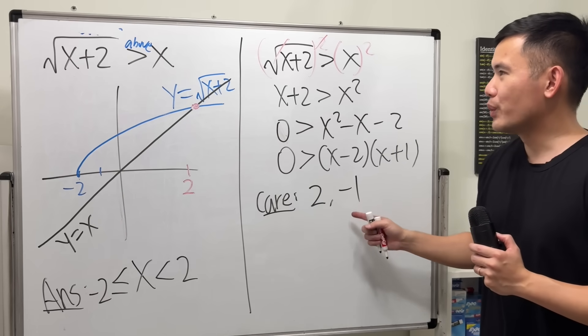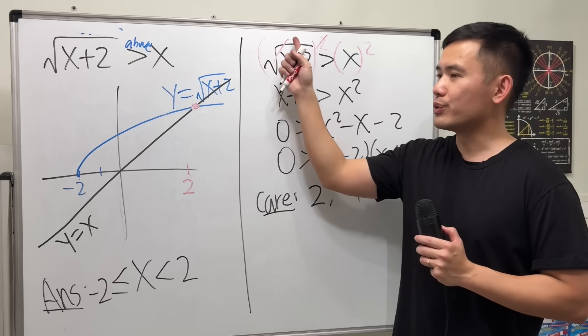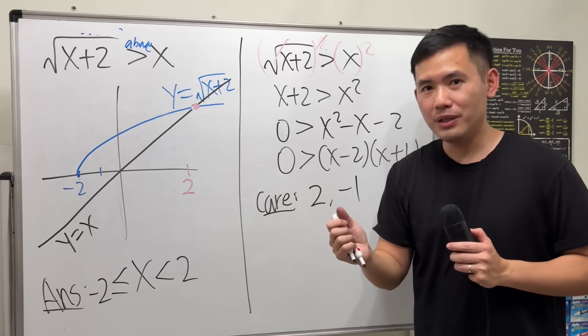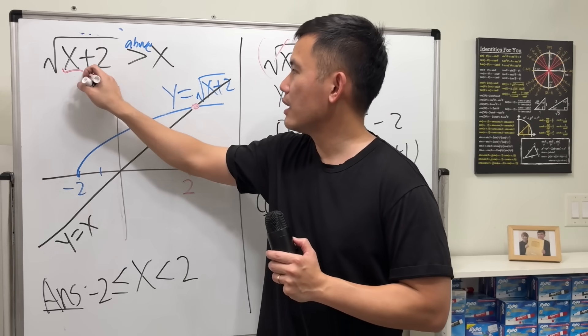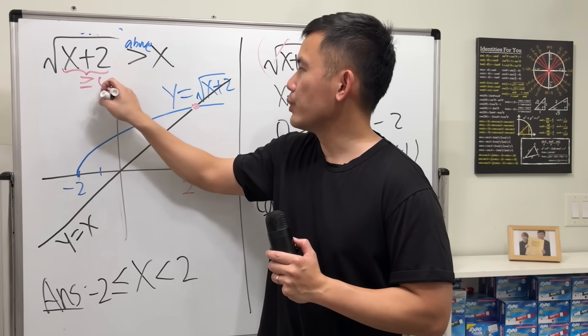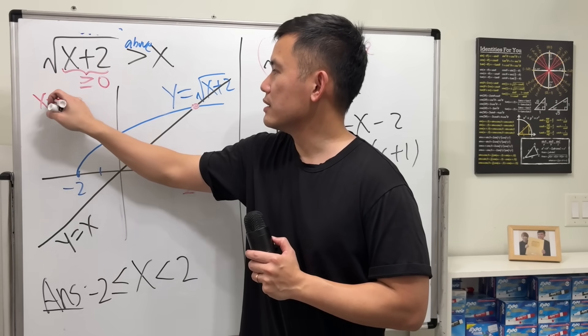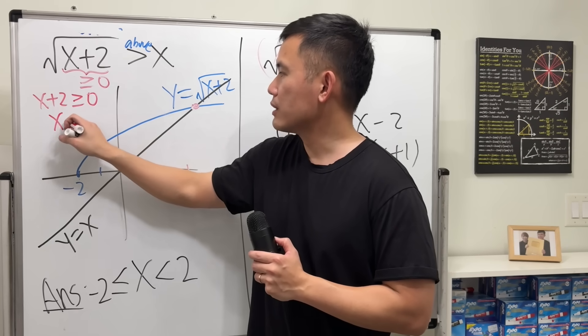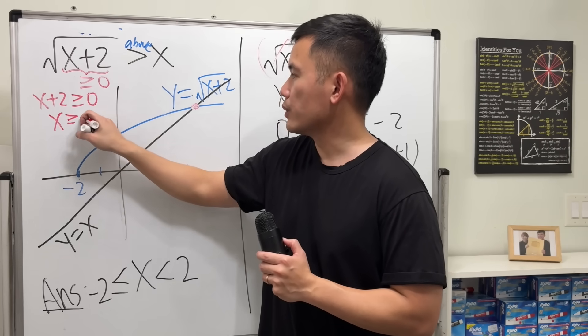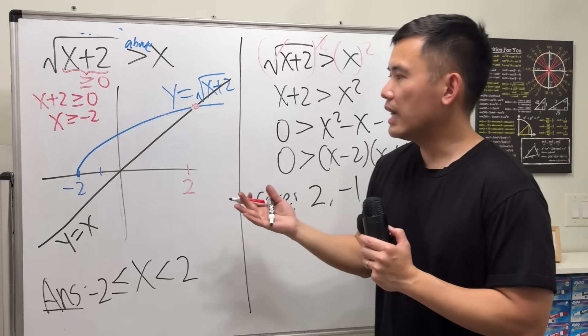The reason that this doesn't work is because when you have square roots, there's a domain issue. You need to make sure that the inside here has to be greater than or equal to 0. So when x plus 2 is greater than or equal to 0, you have to consider x is greater than or equal to negative 2 as a condition.